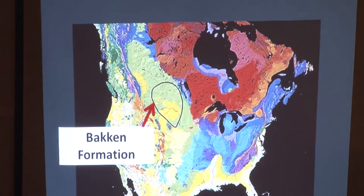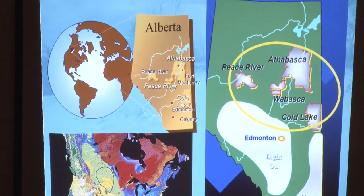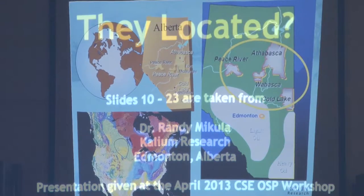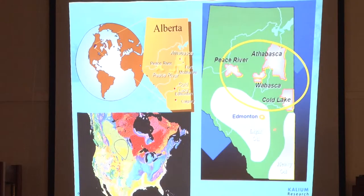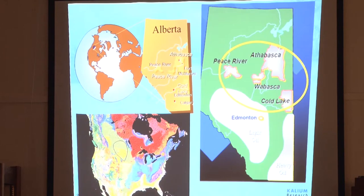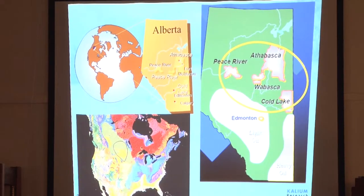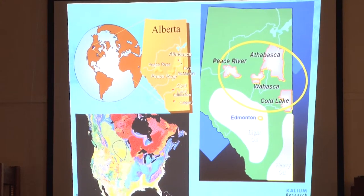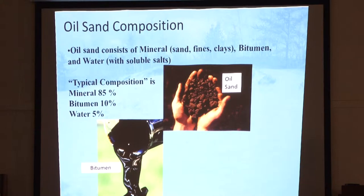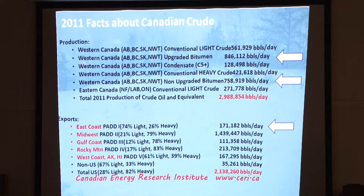This is a big geologic formation that the Bakken is a part of. Here is Alberta. Edmonton sits right on top of a big light oil deposit, very similar to the Bakken. Then there's some heavier oil over here, but all of this within this yellow circle is where the oil sands are.